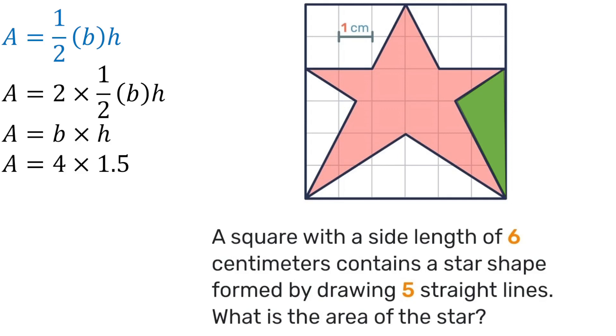What is the base? The base is 4. What is the height? It's 1.5. So 4 times 1.5 gives you 6. So both of those triangles on the side together add up to give you 6.